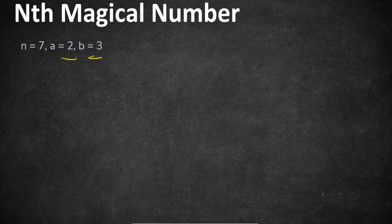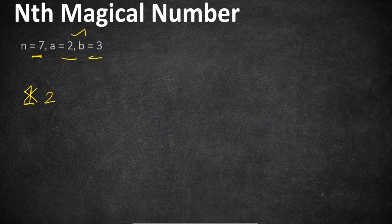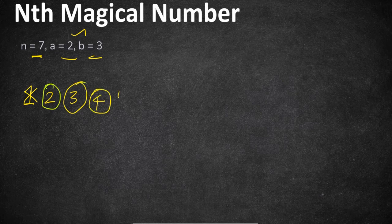We have to return the seventh magical number. Starting from integer 1: 1 is not divisible by both 2 and 3, so it cannot be a magical number. Integer 2 is divisible by 2, so as per the problem statement, if any number is divisible by a or b, then it is a magical number — so 2 is our first magical number. Next, 3 is also a magical number, divisible by 3. Then 4 is also a magical number, divisible by 2. Integer 5 cannot be divided by either 2 or 3.